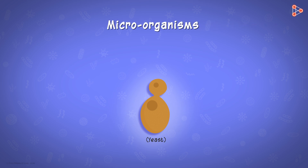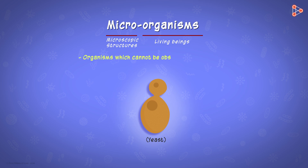Now, as the name says, micro means very small or microscopic structures, while organisms are living beings. Thus, those organisms which cannot be observed with the naked eye and require a microscope to be seen are called microorganisms.